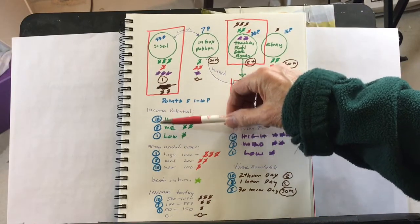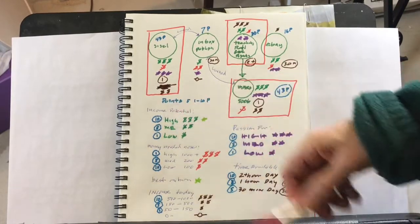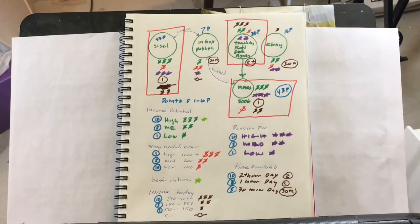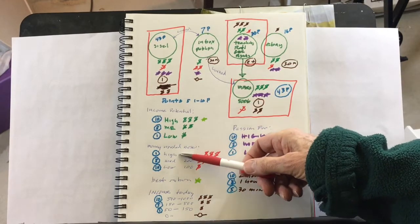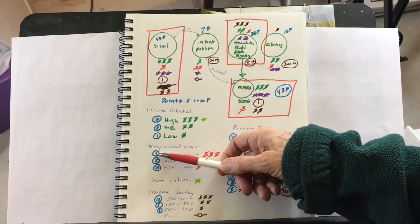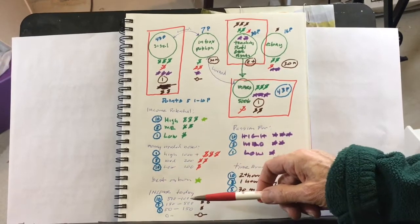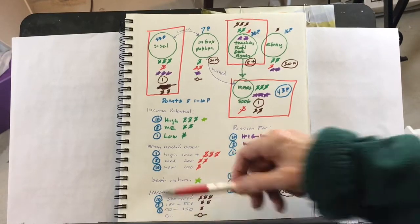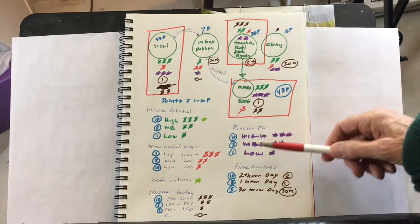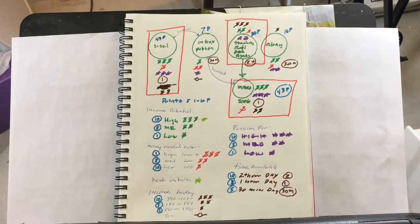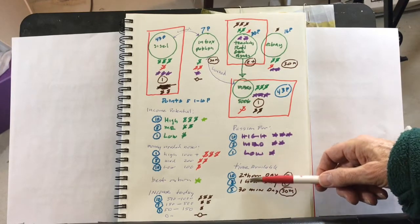Then, I attached a point system. So if it's a high income today, it gets 10 points in a scale of 1 to 10, 10 being the highest. If it's low income potential, it only gets one point. And if money needed now is high, that gets a low score of 1. If it's low, you can get involved for very little money, it gets a 10. Income today, the higher income gets a 10. The lowest income gets a 1 or a 0. A passion, the highest passion gets a 10. The medium passion gets a 5. The lowest passion gets a 1.